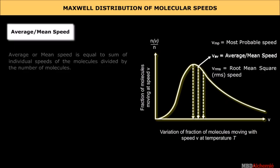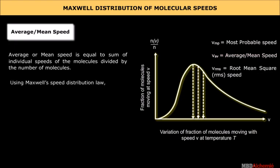Average or mean speed is equal to sum of individual speeds of the molecules divided by the number of molecules. Using Maxwell's speed distribution law, v̄ or vaverage is equal to √(8KBT/mπ).